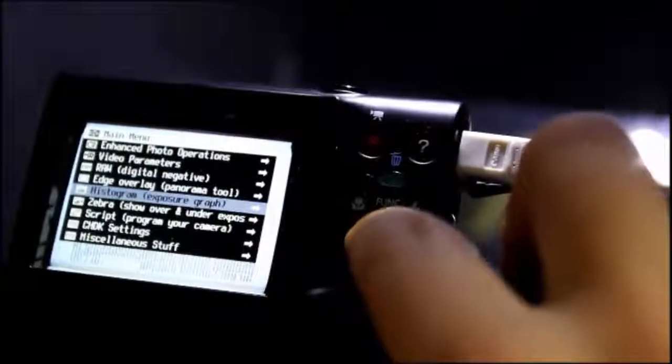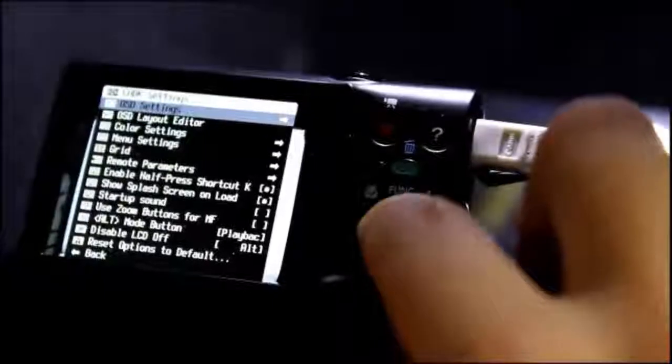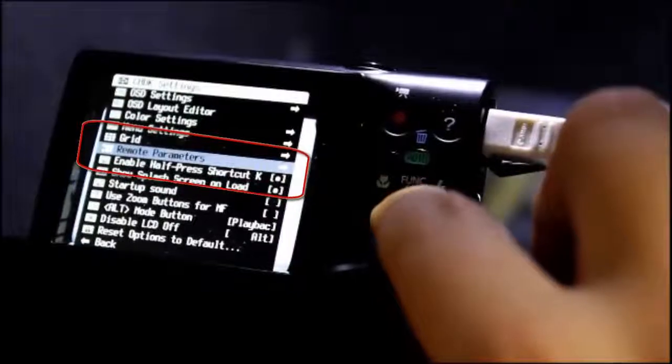Scroll down using the disk button until you highlight CHDK settings. Press the center func set button to select. Scroll down to remote parameters and select.